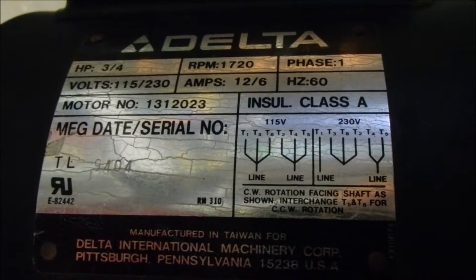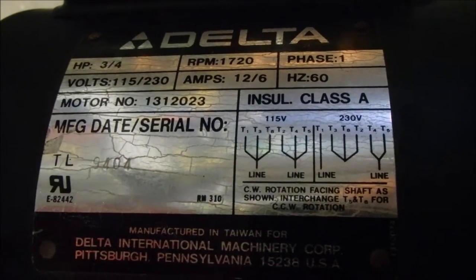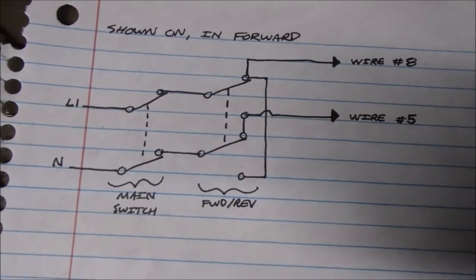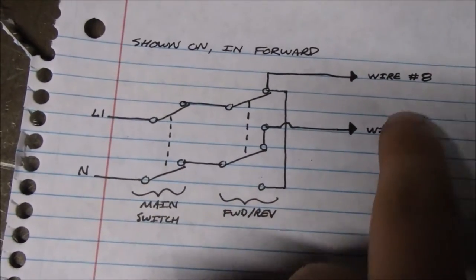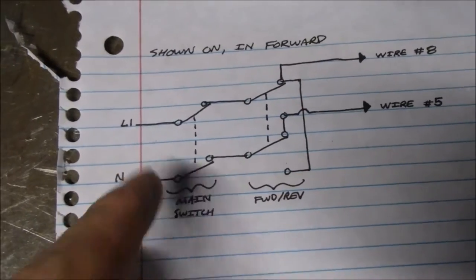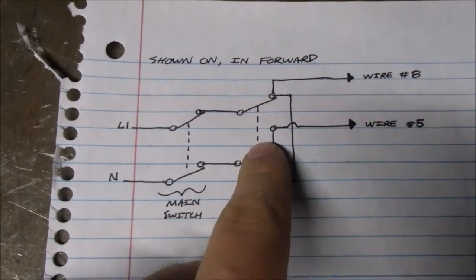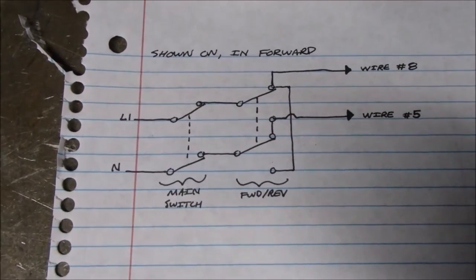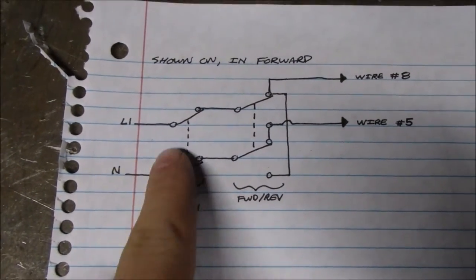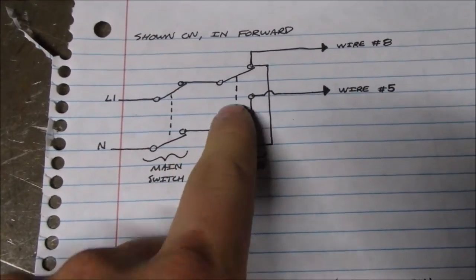I have a very simple way to do that. Instead of hooking wire number 8 and wire number 5 directly up to line 1 and neutral, I'm going to put in a switch - a double pole double throw switch. This is just the main power switch, and then this connection right here is actually in the motor connection box.